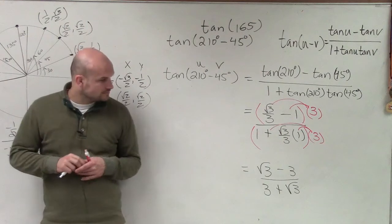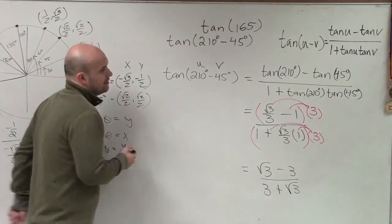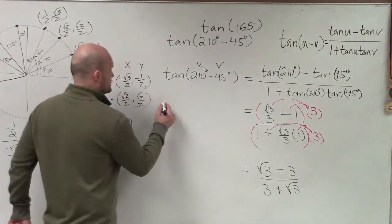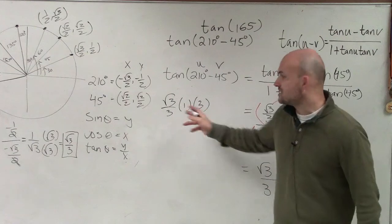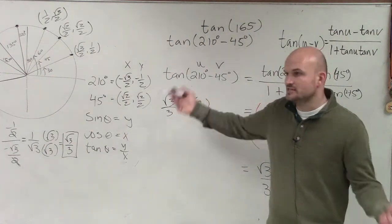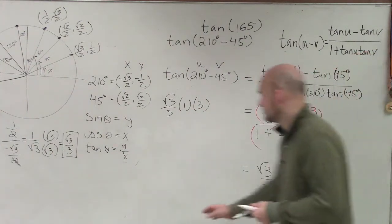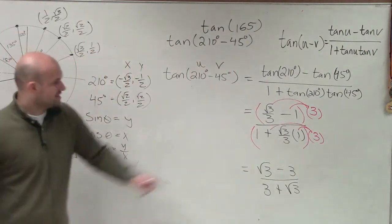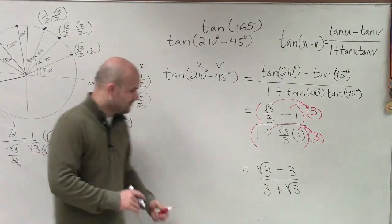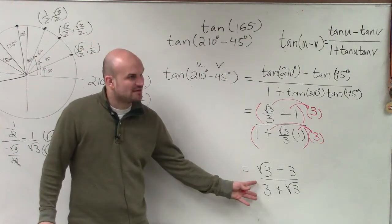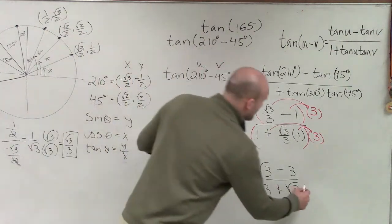Student question: On the bottom, when you multiplied by 3, shouldn't you have also distributed it to the 1 and the 3 over 3? Answer: No — what that is, is square root of 3 over 3 times 1 times 3. You don't distribute across multiplication. If it was addition you'd distribute to both terms, but with multiplication you don't have to. When you multiply 3 times that, it just gives you square root of 3.